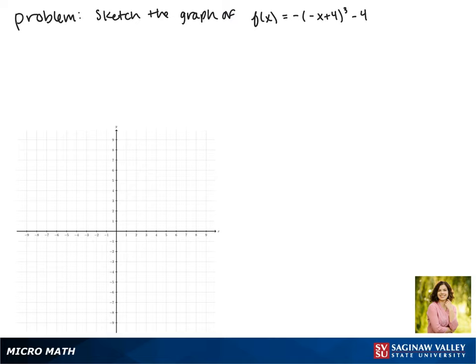Today we'll be graphing the function f(x) equals the negative of (negative x plus 4) cubed minus 4. We'll start by rewriting our function because we want x to be by itself. This gives us f(x) equals the negative of negative times (x minus 4) all cubed minus 4.